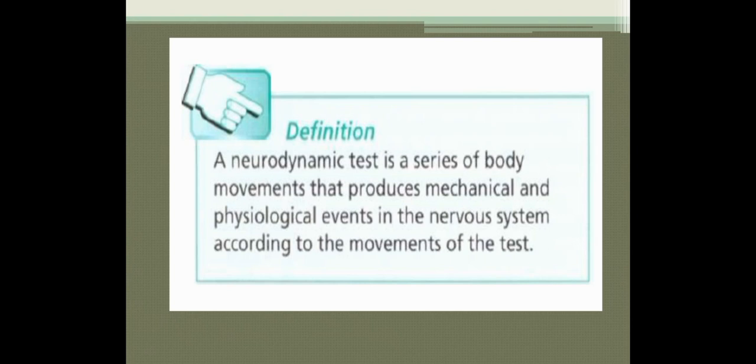So what is a neurodynamic test? It is a series of body movements that produces mechanical and physiological events in the nervous system according to the movements of the test. For example, the slump test: first we do slouching with thoracic and lumbar flexion followed by cervical flexion, then we ask the patient to extend the knee followed by ankle dorsiflexion. So the slump test is a series of body movements which puts the nerve into tension — that is a neurodynamic test.